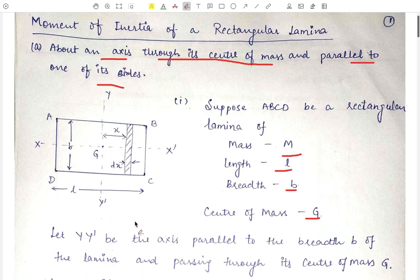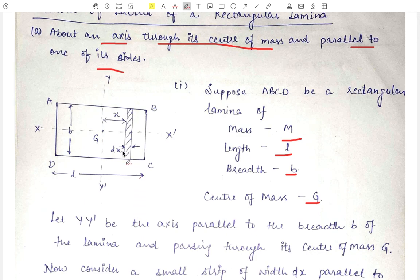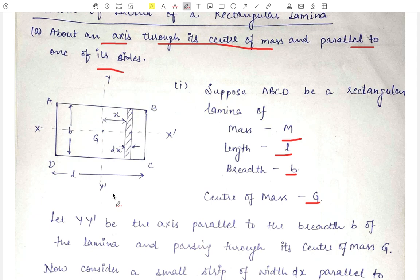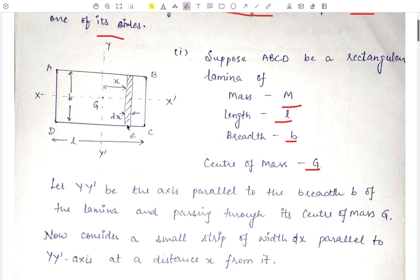We will find out the moment of inertia of this lamina about this YY' axis. For that, we consider a small strip of thickness dx at a distance x from this YY' axis. First we will find out the moment of inertia of this strip about this axis, and then with the help of that small moment of inertia we will find out the moment of inertia of the complete lamina.